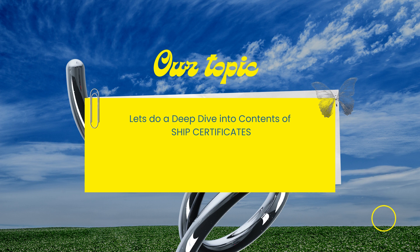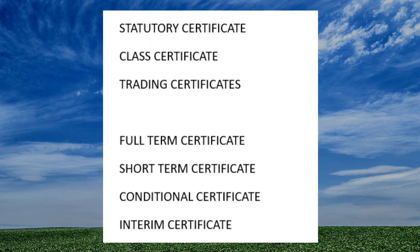In the next few upcoming videos we will try to take a deep dive into the ship's certificates and explore their contents. As all of you know, for continuing the operations of the vessel the ship requires a set of certificates. These certificates can be broadly classified into two classes: statutory certificates, which are issued by the flag administration or a recognized organization on behalf of the flag administration, and the other set which includes trading certificates and also the certificate of class. For our first video we will discuss the certificate of class.